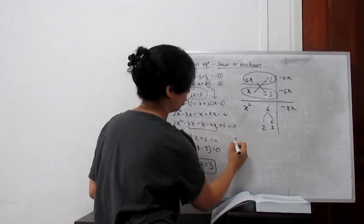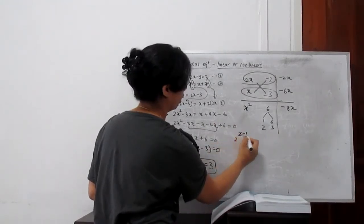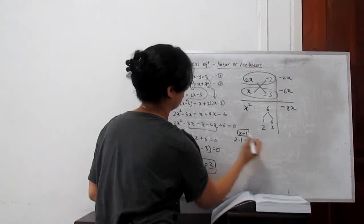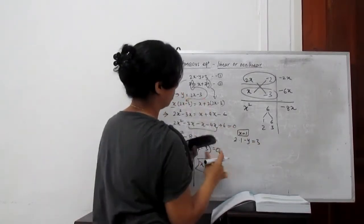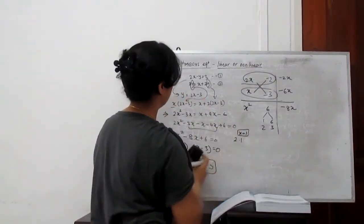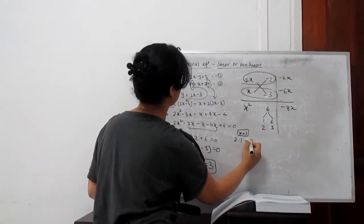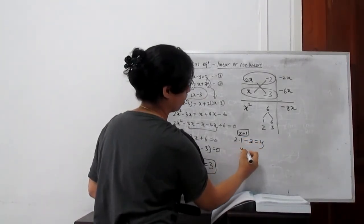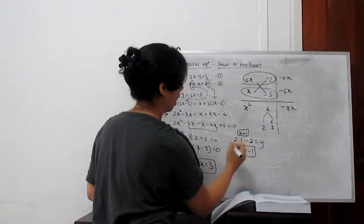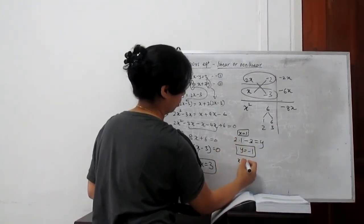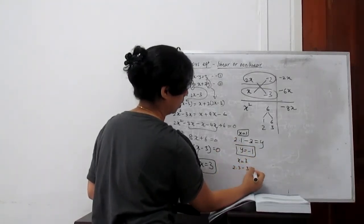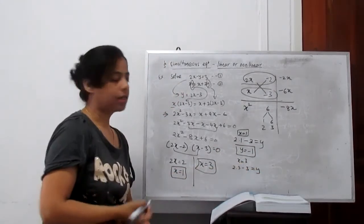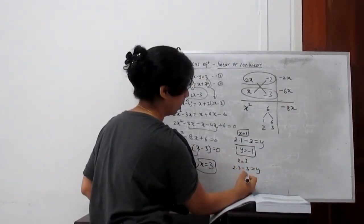So 2 times, when I put x equals 1, 2 times 1 minus y equals 3. Or I'll put here, more easy. So y is 2x minus 3 equals y. So 2 minus 3 equals minus 1. Another, x equals 3, so 2 times 3 minus 3 equals y. 2 times 3 is 6, 6 minus 3 is 3. So y is 3.